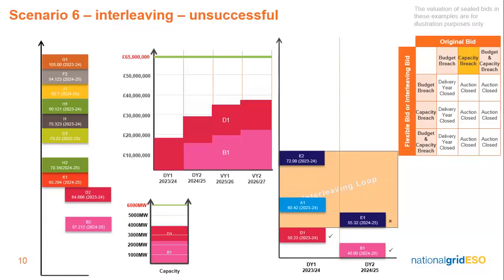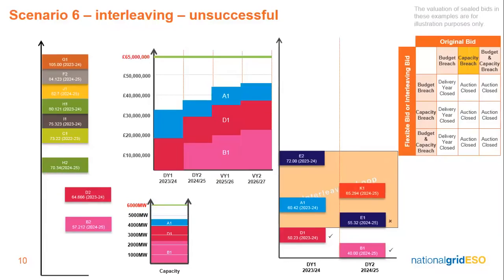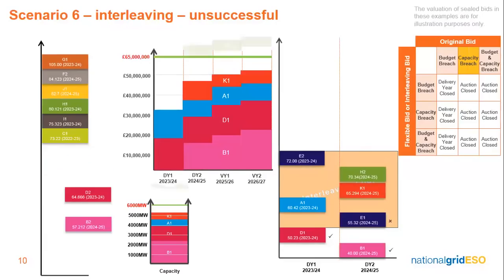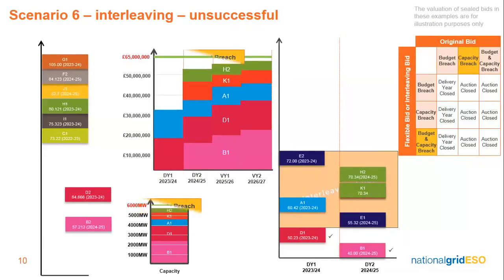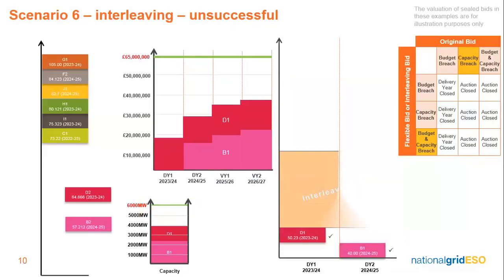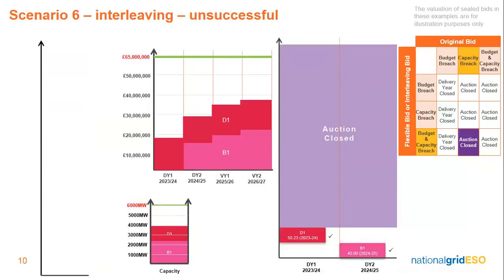The system will try to provisionally allocate bid A1, which fits within budget and capacity cap. The system tries to provisionally allocate bid K1, and again this fits within the budget and capacity cap limits, so it's accepted. Bid H2 fits within the budget and capacity cap limits and is provisionally accepted, clearing up bid K1. Finally, bid E2 has breached both the capacity cap and the budget. Looking at our chart on the right, we can see that this would result in the closure of the auction, as the original bid triggered a capacity breach. No more bids can be accepted, and that's the end of the auction.